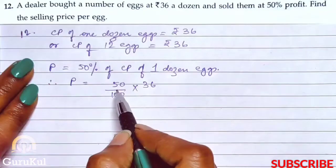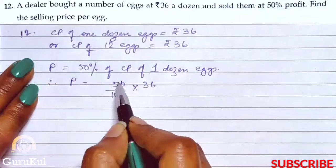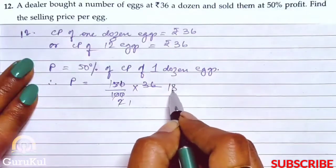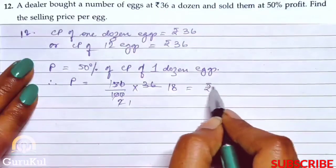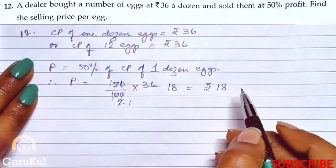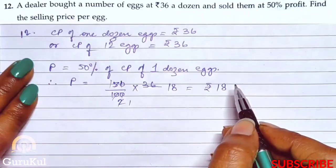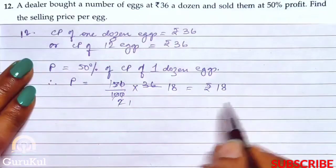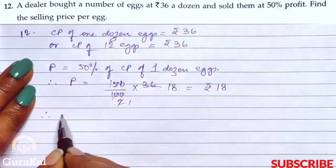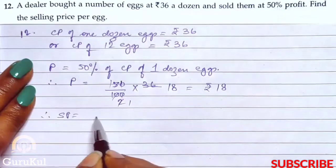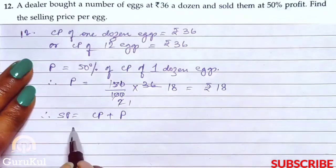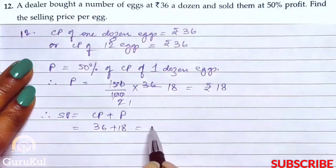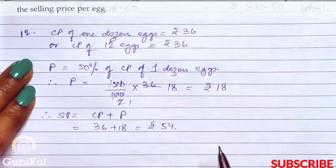Now let me calculate. 50% of 36 gives us rupees 18. So, he made a profit of rupees 18 per dozen. Therefore, SP is equal to CP plus profit, that is 36 plus 18, which gives us rupees 54.